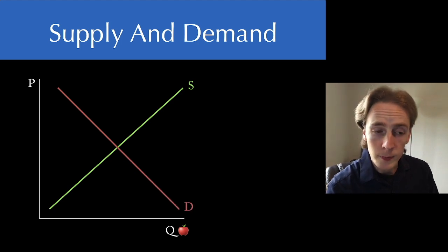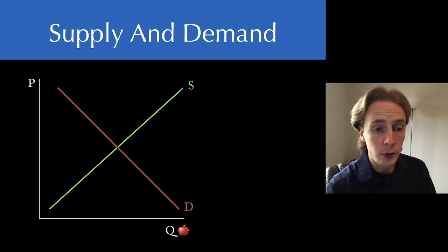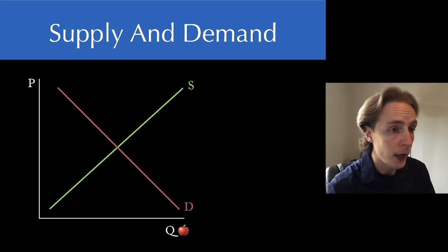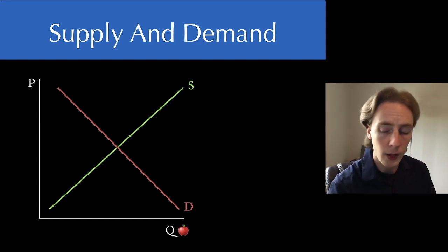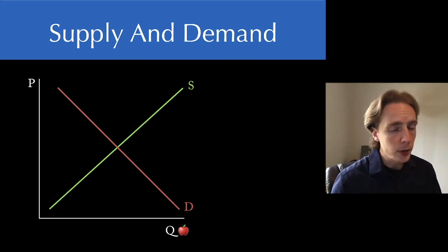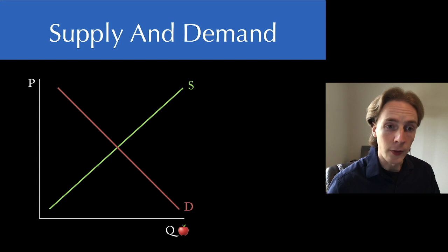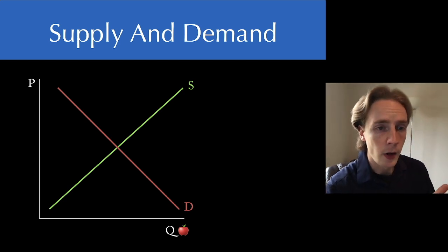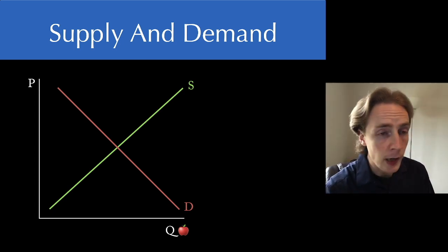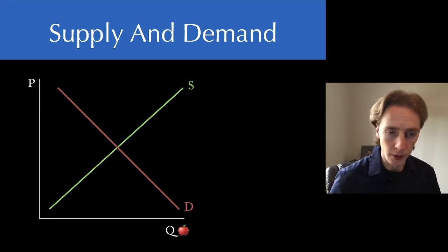Here's our demand curve. The demand curve slopes downward — that's our law of demand. The more you have to give up for something, the less you're going to be willing to do. Now putting these together gives us a representation of the market for one good or service — in this case, let's say it's the market for apples.